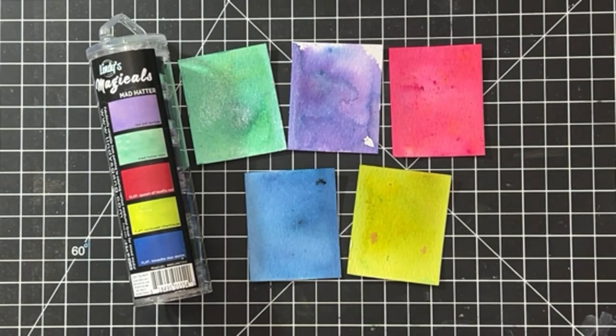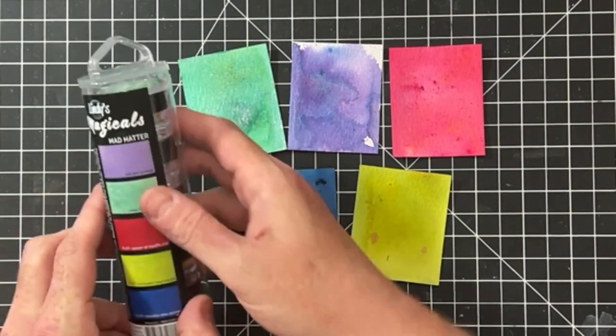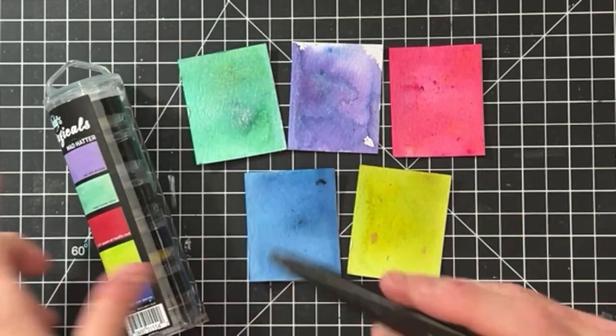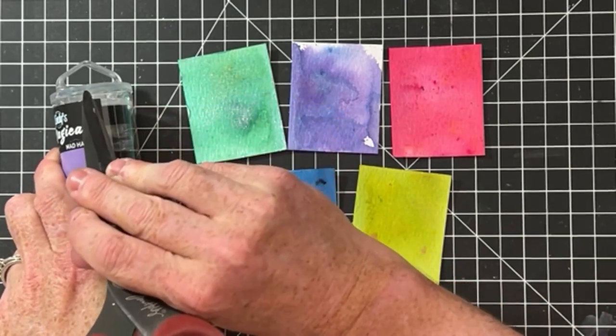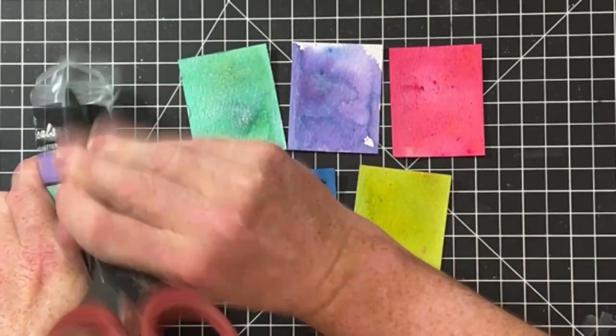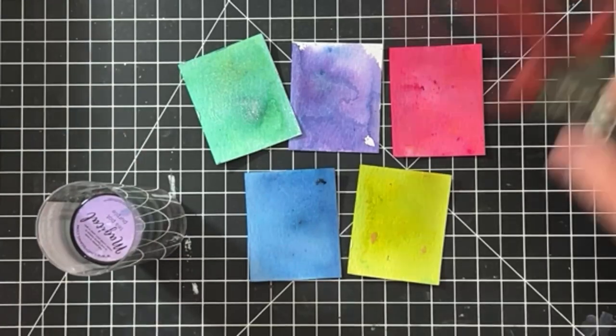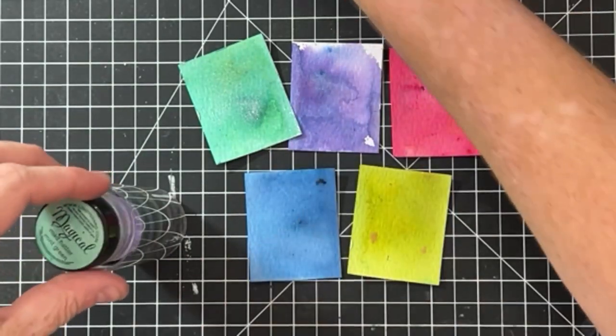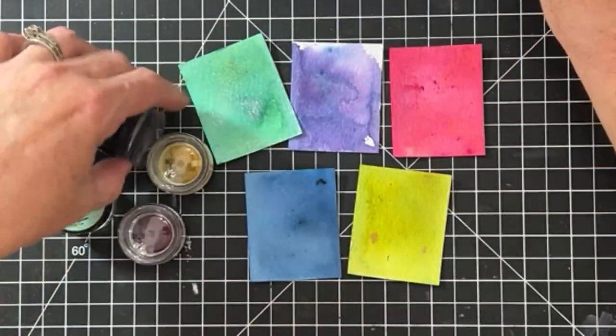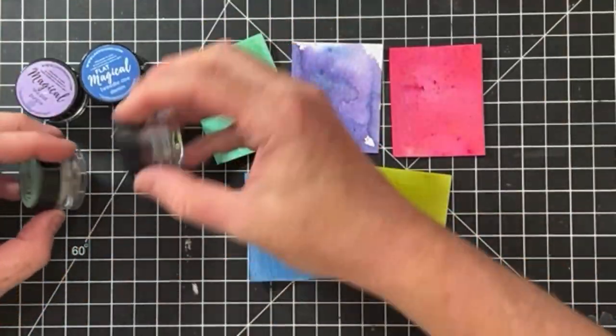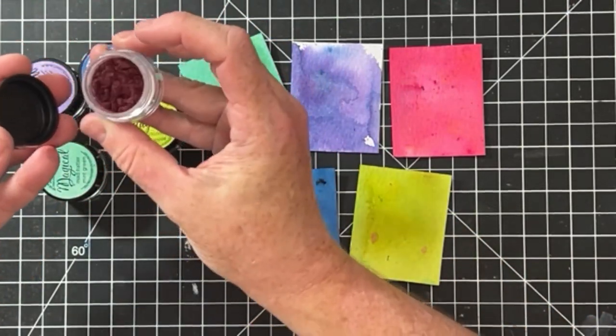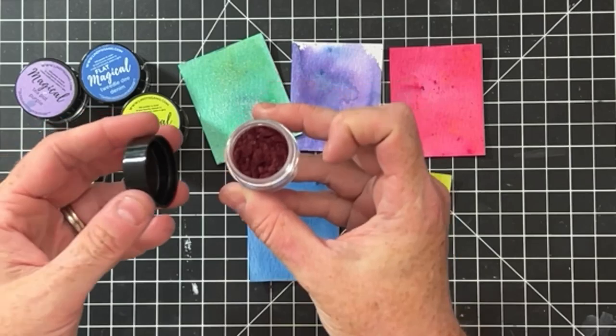So when you get your pack, they're going to look like this and there's going to be a topper on it. And to get this topper off, I had to get a little creative. You want to take something hard and pop it off. Just try to be careful if you have something sharp that you don't cut yourself. And then these come in cute little jars. And it doesn't look like much powder when you open them up, but a little goes a long way. This will last you a ton.